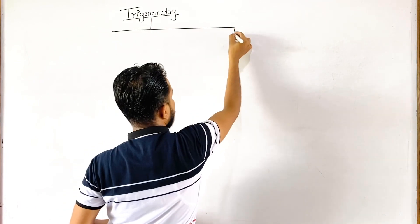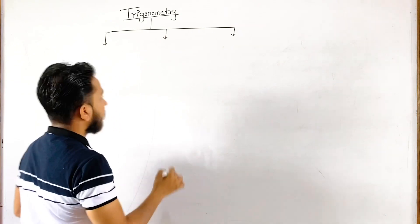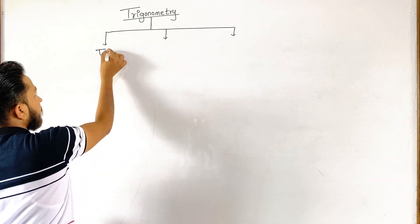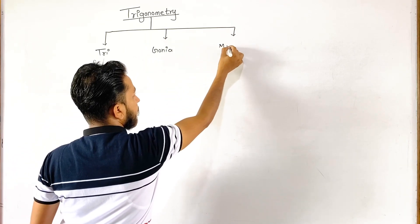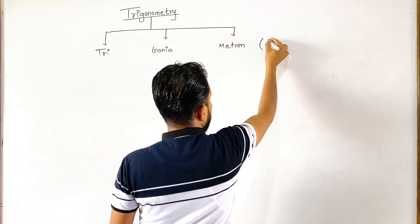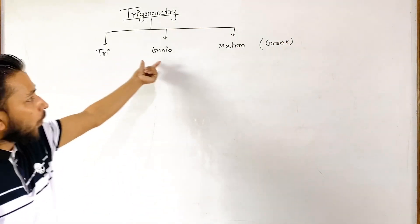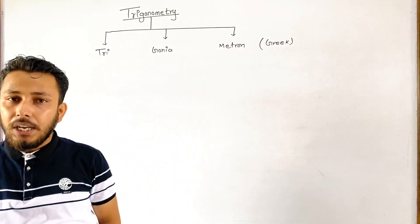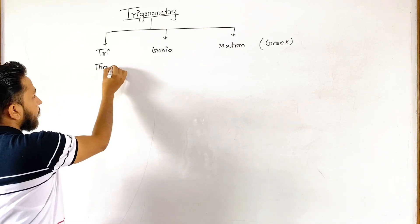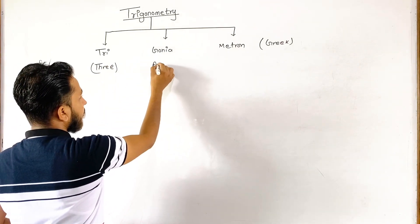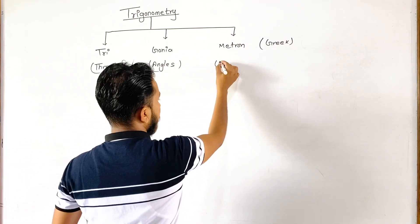Trigonometry is composed of three parts: 'tri', 'goniya', and 'metron'. These three are the three parts — try, goniya, and metron — whose composition makes trigonometry. Similarly, 'goniya' represents angles and 'metron' represents measurement.